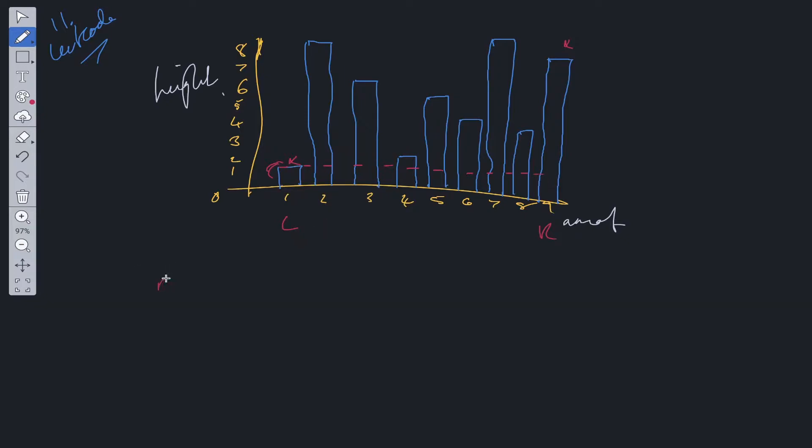So area is going to be equal to Math.min of height at left and height at right. That's the first part of the area, but we also need to times it by the width.